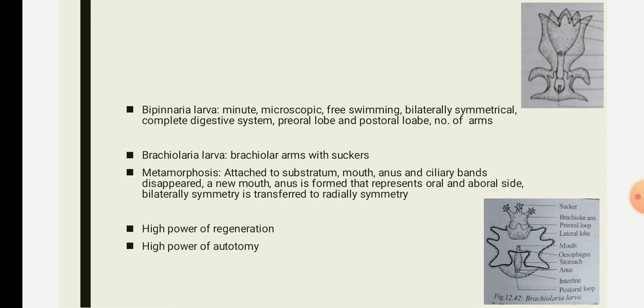The arms are: median dorsal arm, medial ventral arm, pre-oral arm, post-oral arms, anterodorsal arm, posterodorsal arm, and posterolateral arm — giving six to seven arms total. The next stage is the brachiolaria larva, which is the third larval stage of the starfish.